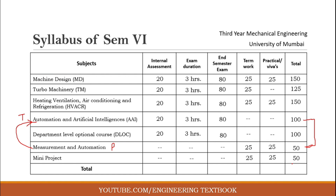Now let's see the total marks for this semester. There are 100 marks of internal assessment across all subjects, 400 marks of end semester examination, 125 marks of term work, and 100 marks of practical and viva. The total number of marks in semester 6 is 725 marks. You can take a screenshot of this table for future reference. Thank you for watching — please like, share, and subscribe to my channel.